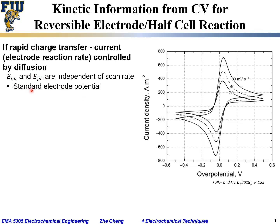Specifically, the standard electropotential: if the reaction is highly reversible and controlled by diffusion, then the standard electropotential would be halfway between the anodic peak and the cathodic peak. The standard equilibrium potential is the average of the anodic peak and the cathodic peak.